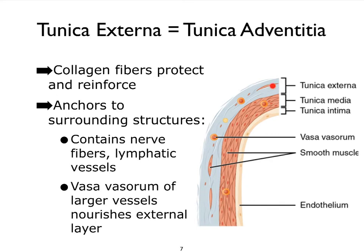Finally, the external layer, which we call the tunica externa or sometimes the tunica adventitia — be sure you know all these synonyms — is going to mostly be made up of collagen fibers, so it's more of a fibrous connective tissue layer. It's going to help protect and anchor the blood vessels to the surroundings. Within this layer, particularly if it's a pretty thick layer, we're going to see nerve fibers, lymphatic vessels, and even blood vessels present. These vessels within the wall we call the vasa vasorum, which literally stands for vessels within vessels.